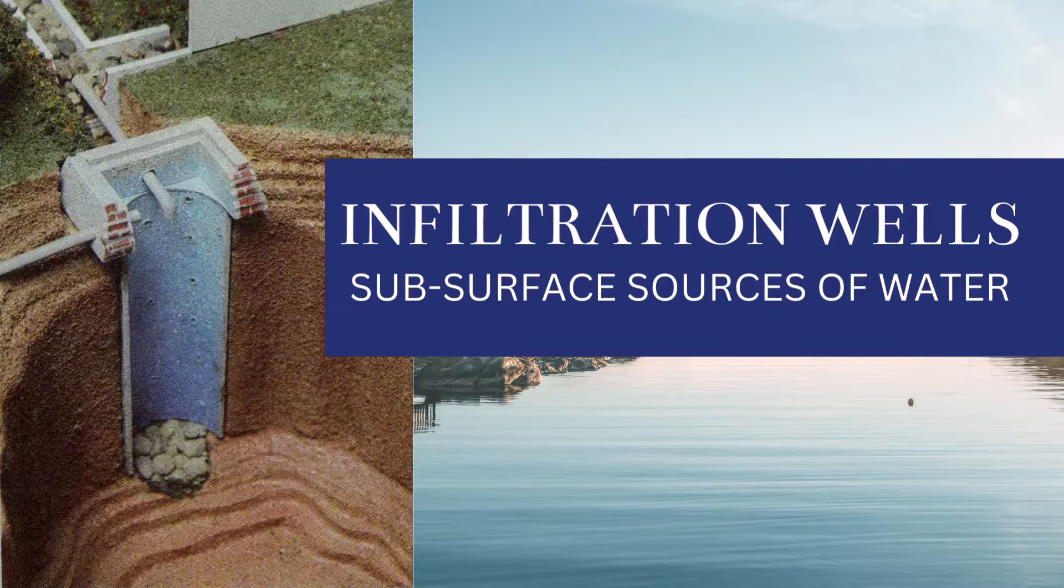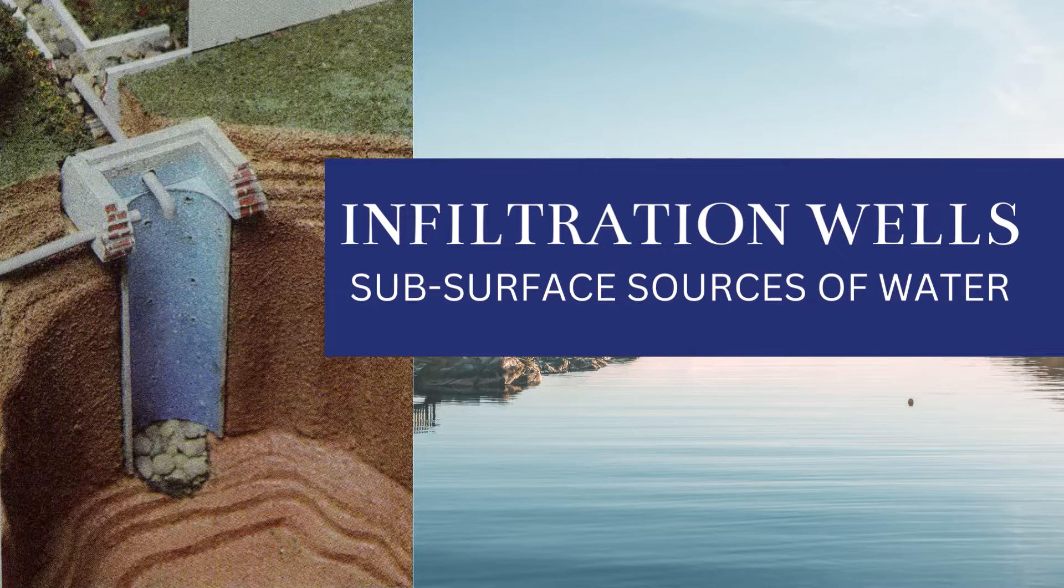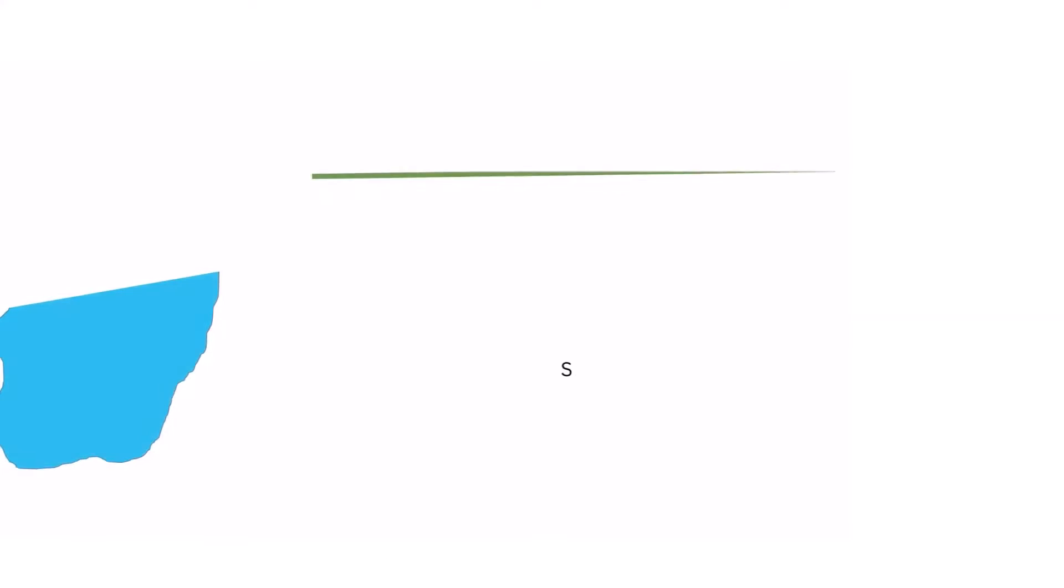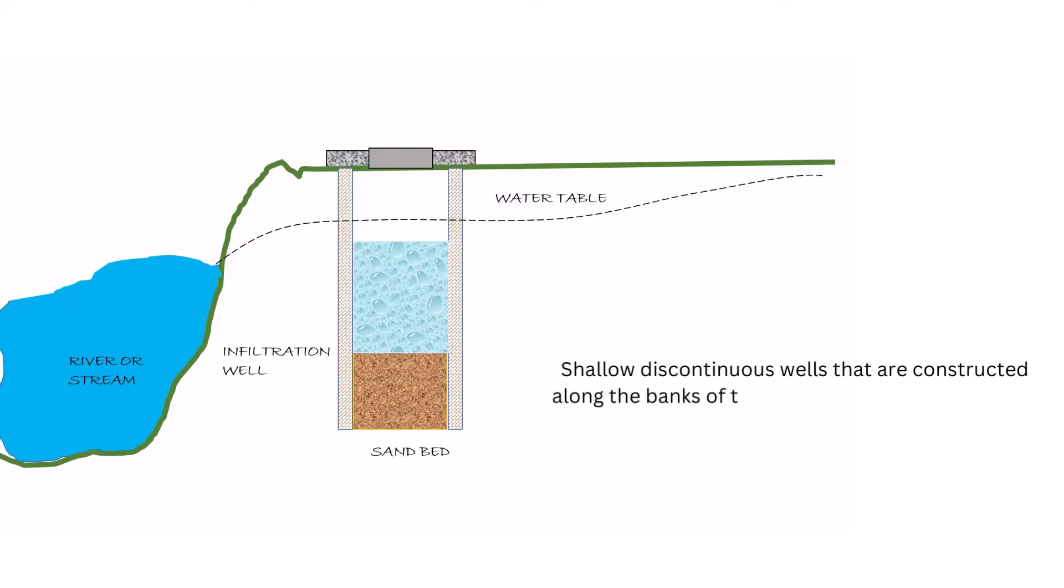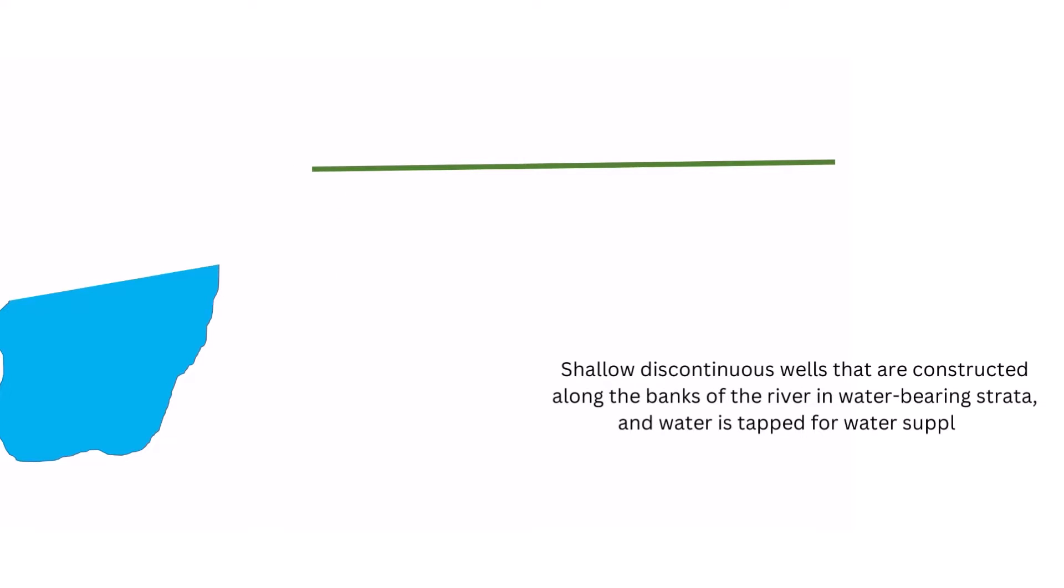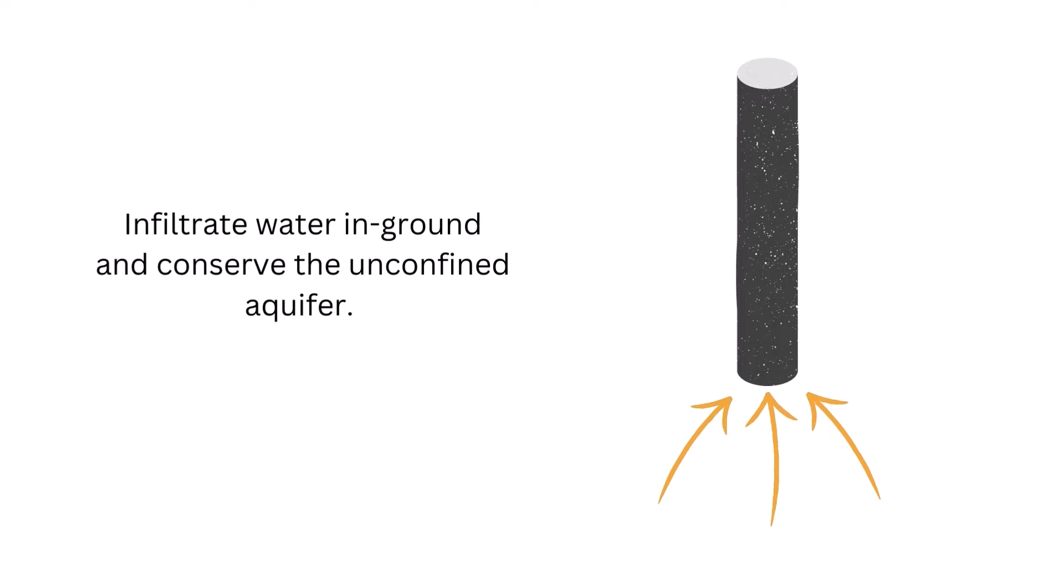Infiltration wells are shallow discontinuous wells that are constructed along the banks of the river in a water bearing strata, and the water is tapped for water supply. Hence, the main purpose of an infiltration well is to infiltrate water in ground and conserve the unconfined aquifer.